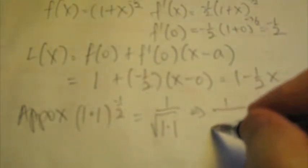Now we are asked to find the approximation of 1.1^(-1/2), which of course is 1 over the square root of 1.1. This will imply that we could write it like this, 1 plus 0.1.